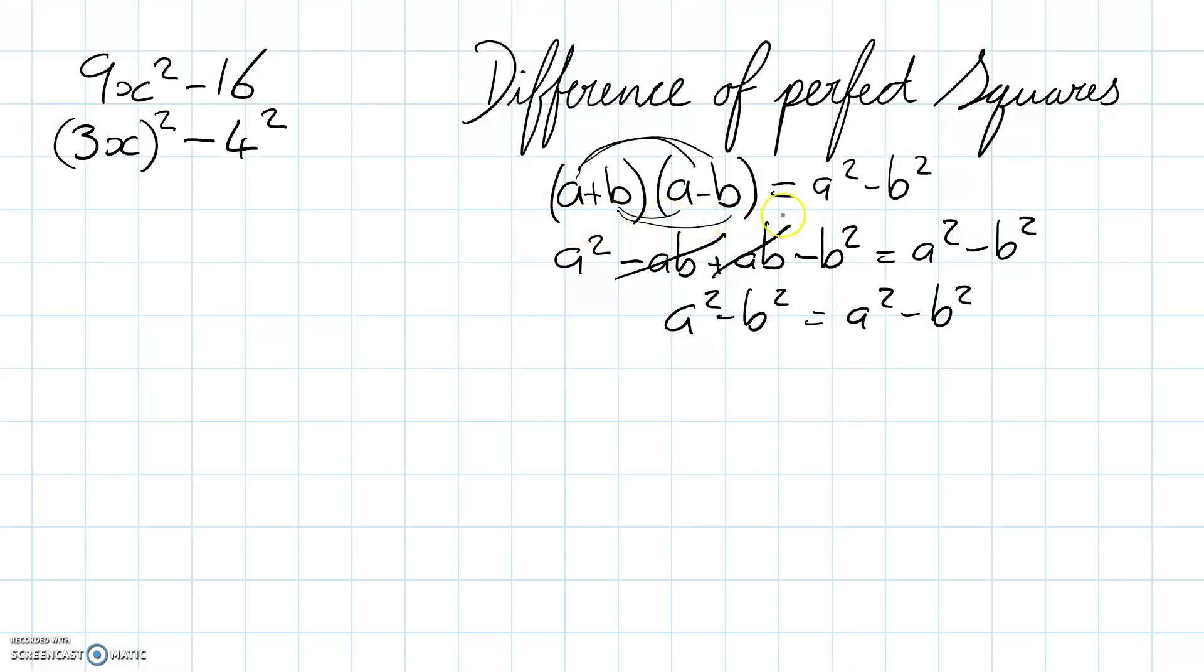Now this tells us that if we have something squared minus something else squared, we can make our two brackets with those terms, one of the brackets having the plus operator and one of them having the minus operator. So if we make our two brackets for our factorization,